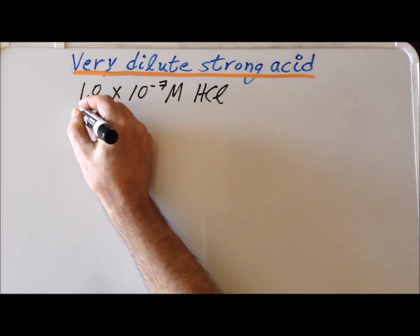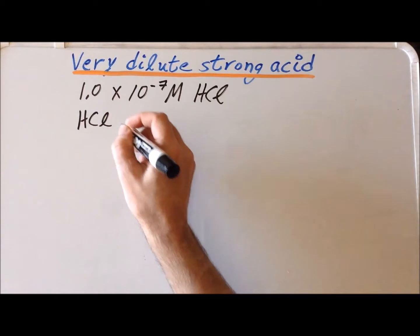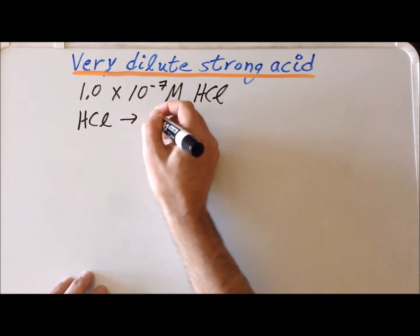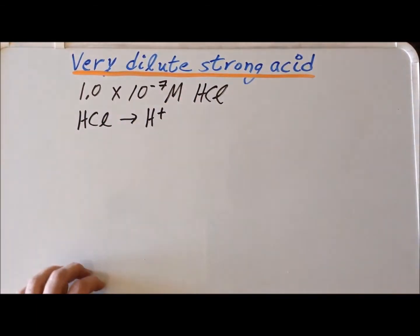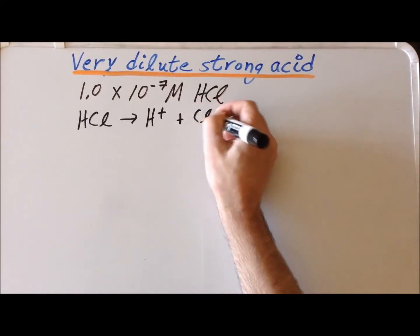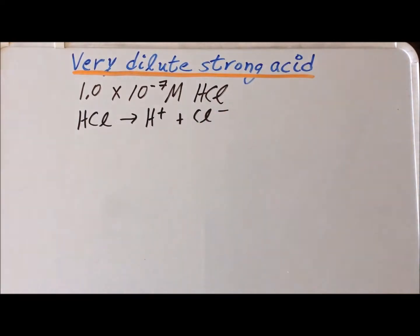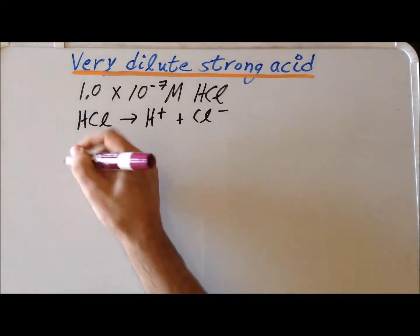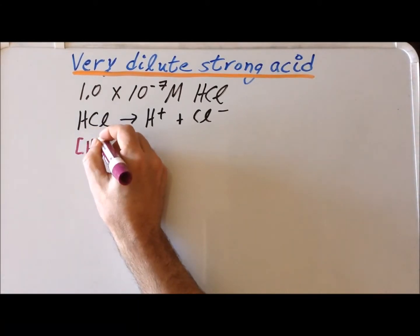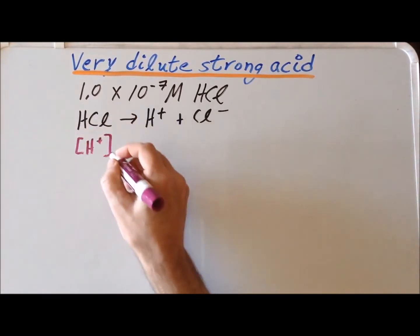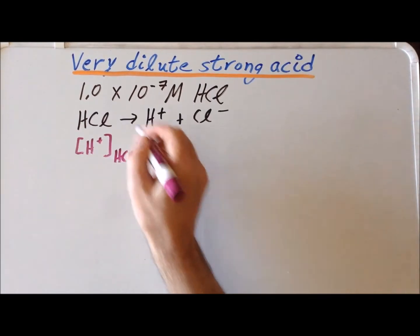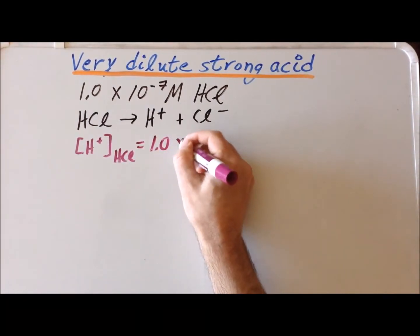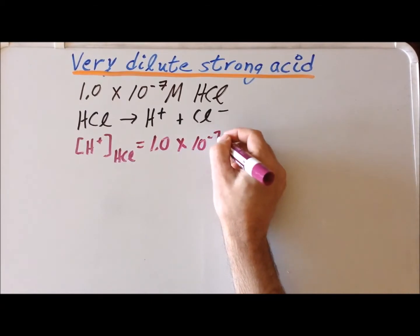Because hydrochloric acid is a strong acid, in aqueous solution it dissociates completely to form hydrogen ion — which would be equivalent to a hydronium ion — plus chloride. This happens completely, so we write it with a single arrow. Because of that, we know that the concentration of H⁺ formed from the dissociation of HCl is exactly equal to 1.0 times 10 to the minus 7 molar.